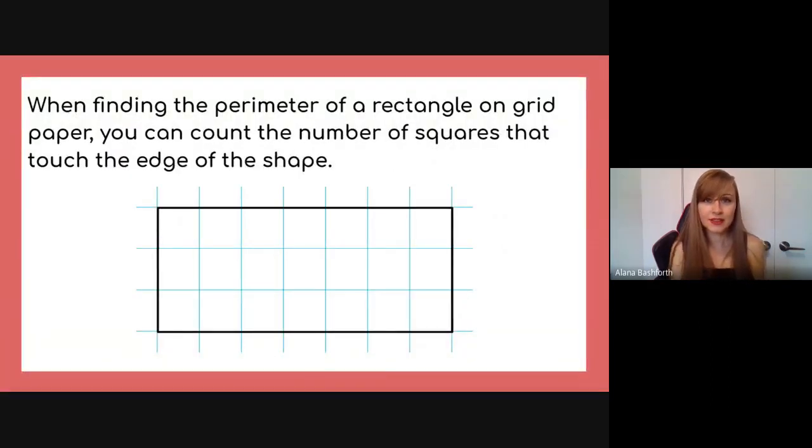And so let's look at perimeter first. So when finding the perimeter of a rectangle on grid paper, you can count the number of squares that touch the edge of the shape. And so if I'm doing this on paper, usually I just put a little tick beside each segment of the grid paper.